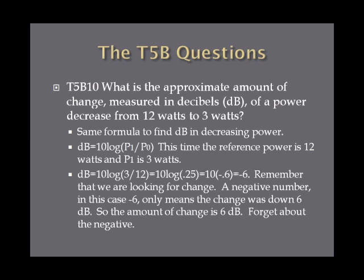What is the approximate change in decibels of a power decrease from 12 watts to 3 watts? Using the same formula, dB = 10 × log(P1 / P0), with P0 = 12 W and P1 = 3 W: dB = 10 × log(3/12) = 10 × log(0.25) = 10 × (−0.6) = −6. The negative only means the change went down 6 decibels. Since we're measuring the amount of change, the answer is 6 decibels.